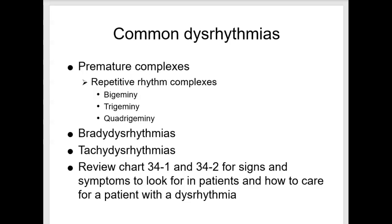Bigeminy exists when normal complexes and premature complexes occur alternating in a repetitive two-beat pattern, with a pause occurring after each premature complex, so complexes occur in pairs. Trigeminy is a repeated three-beat pattern, usually occurring as two sequential normal complexes followed by a premature complex and a pause, repeating itself in triplets.